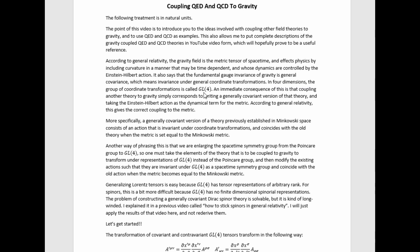In four dimensions, the group of coordinate transformations is called GL4, and an immediate consequence of this is that coupling another theory to gravity simply corresponds to writing a generally-covariant version of the theory, and taking the Einstein-Hilbert action as the dynamical term for the metric.